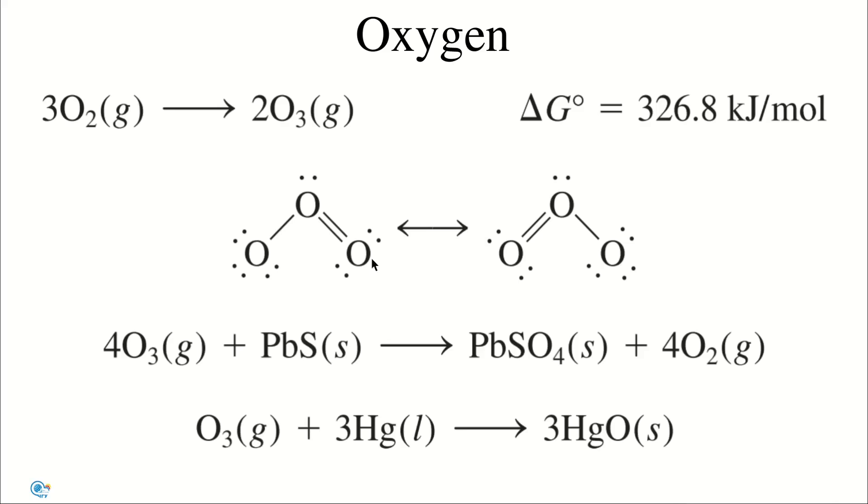Ozone oxidizes all the common metals except gold and platinum. In fact, a convenient test for ozone is based on its action on mercury. When exposed to ozone, mercury loses its metallic luster and sticks to glass tubing instead of falling freely through it. This behavior is attributed to the change in surface tension caused by the formation of mercury oxide.